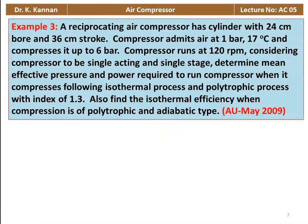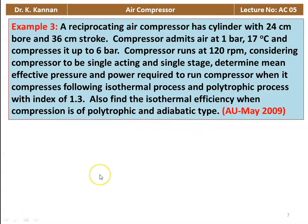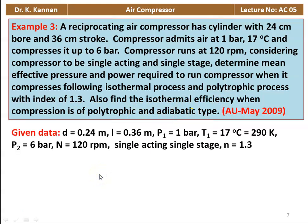Example number 3 from May 2009 question paper. A reciprocating air compressor has a cylinder with 24 cm bore and 36 cm stroke. The compressor admits air at 1 bar, 70°C and compresses it to 6 bar. It runs at 120 RPM, single acting, single stage. Determine mean effective pressure and power for isothermal and polytropic (n=1.3) compression, and find the isothermal efficiency relative to both polytropic and adiabatic work.